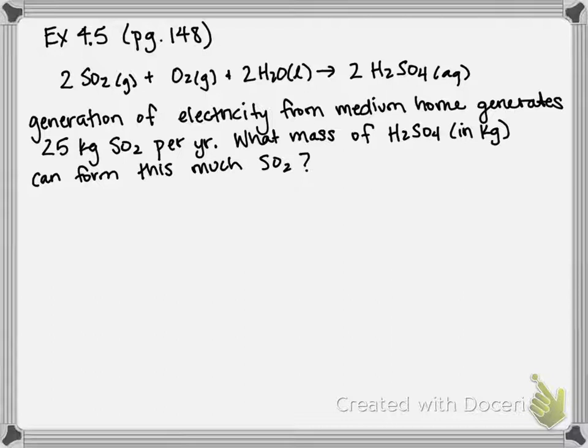That's sulfuric acid. So we're given one starting number, 25 kilograms of SO2, and our mission is to determine the mass of H2SO4 in kilograms produced from that amount of SO2.